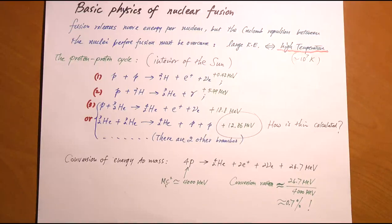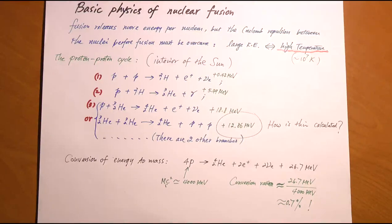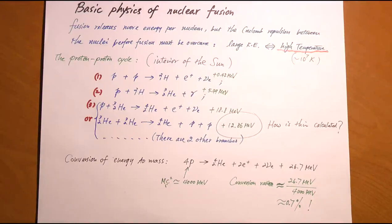You have to overcome their repulsion to get them close enough so that the strong nuclear force, which is attractive, takes over and fusion takes place. To do that, you have to give the nuclei enough energy to overcome the Coulomb potential barrier. With such high kinetic energy per nucleus, you're looking at extremely high temperature—at least 10 million kelvin, and in some cases beyond 10 million kelvin depending on the type of fusion.